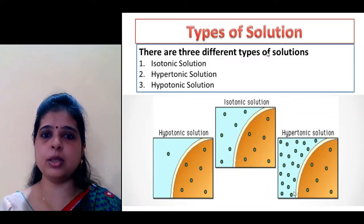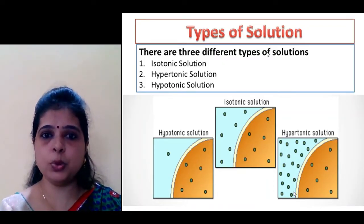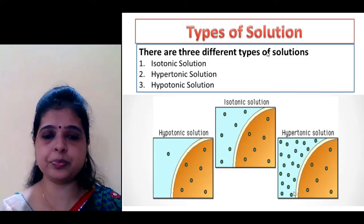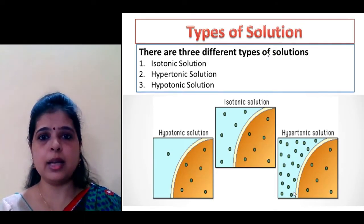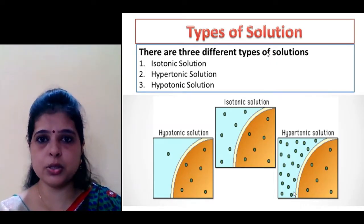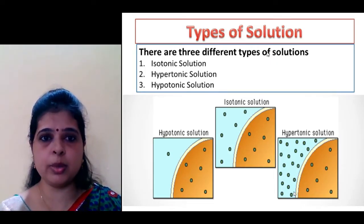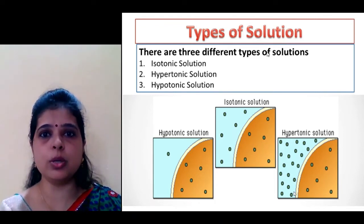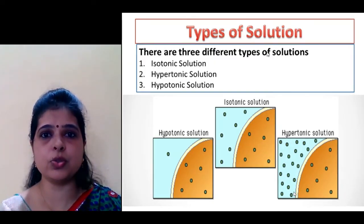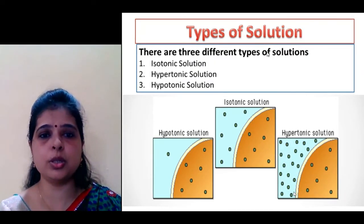What does this mean? Suppose you take two glasses of water and add 5 grams of sugar to each. So both have the same concentration of sugar — the sugar is exactly equal. So what will these two solutions be? Isotonic solution — that is, the same concentration of solute or sugar.